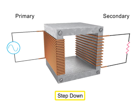In a step down transformer, the number of turns in the primary coil is greater than the number of turns in the secondary coil.